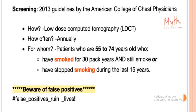For screening of lung cancer, the tool used is low-dose computed tomography or LDCT, performed annually for high-risk patients — specifically those aged 55 to 74 years old, since the mean age is 60 years old, and those who have smoked 30 pack-years and are still smoking.